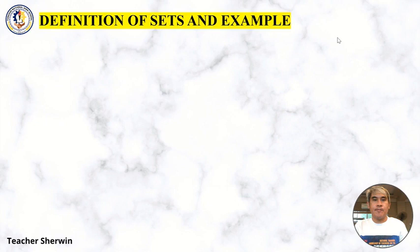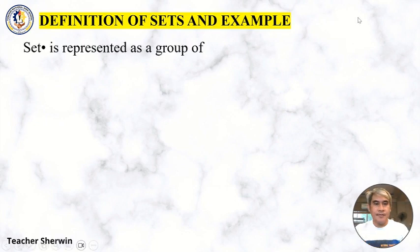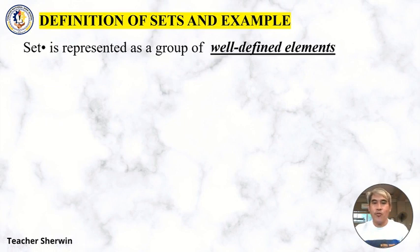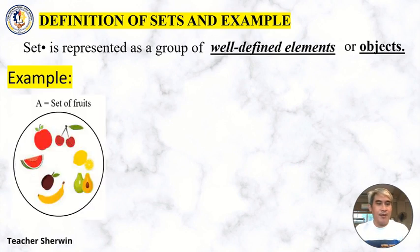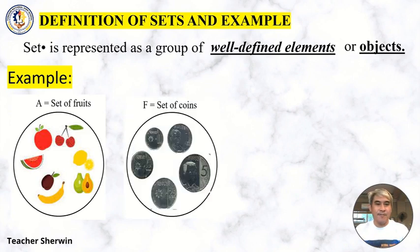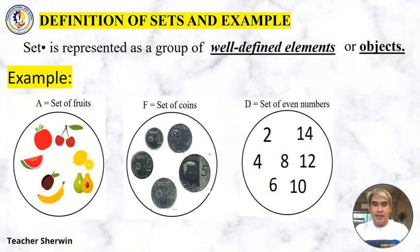Let's go to definition of sets and examples. Set is represented as a group of well-defined elements or objects. Let's have an example: A set of fruits, Set F set of coins, and D for set of even numbers. So that is what we call well-defined elements or objects.